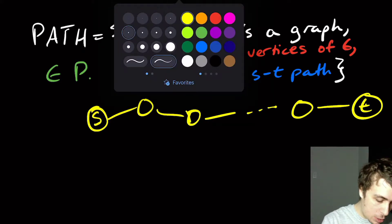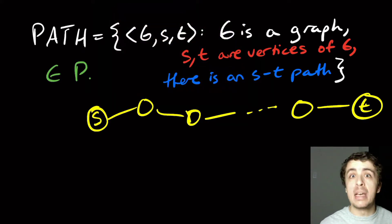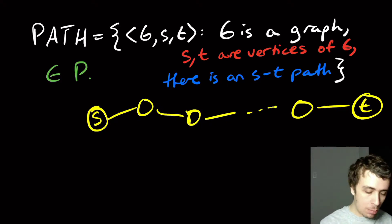One thing we could note here is that G could be undirected or directed. It does not matter here. We will be able to show both versions are in P.